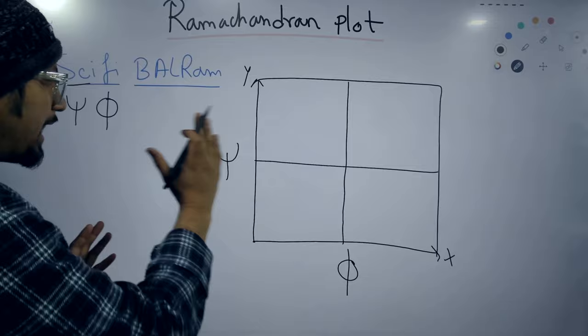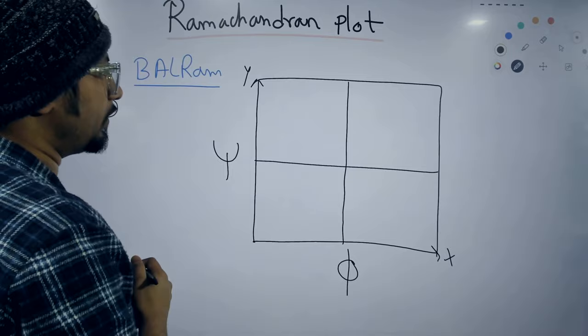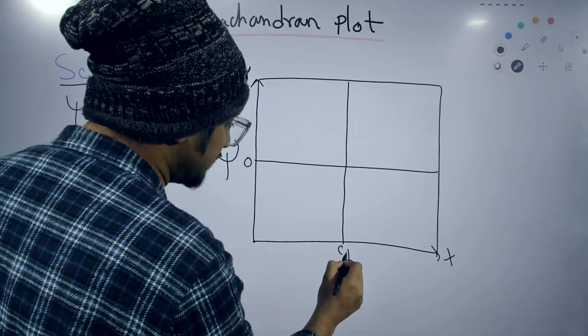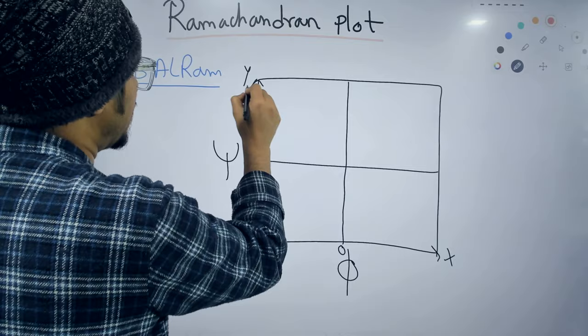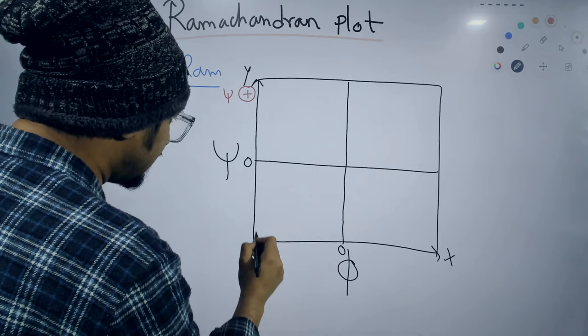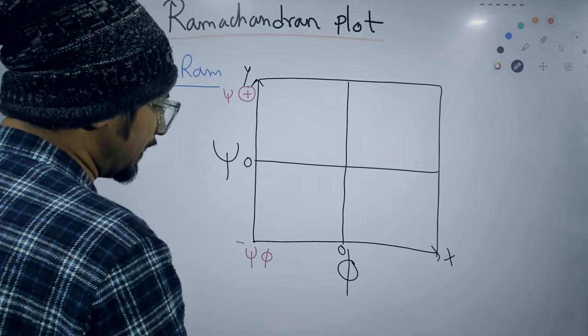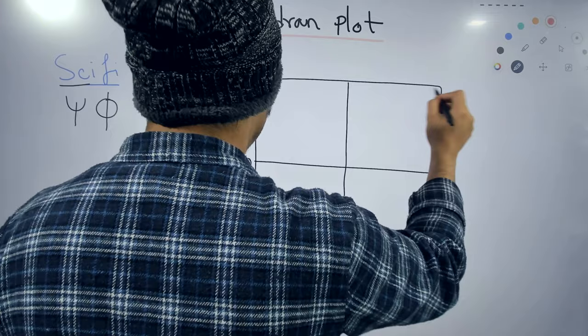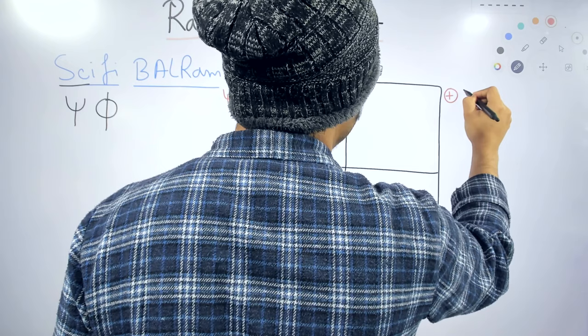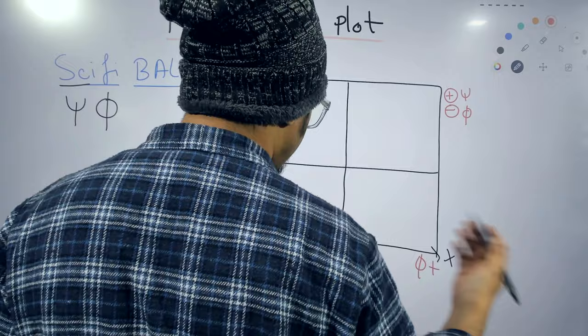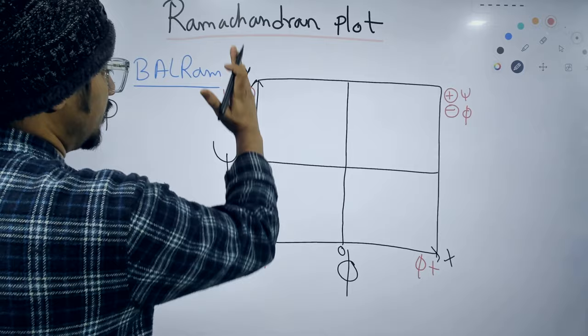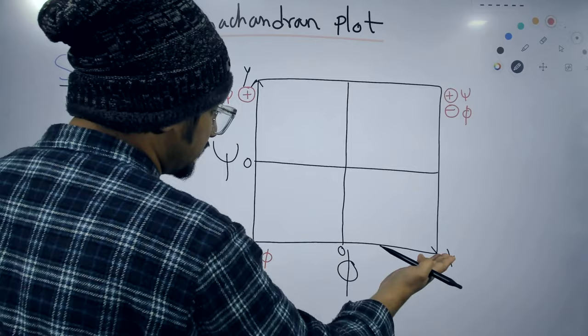Now we put the rest of the values. The center is 0 for both axes. Going upward, psi is positive; going downward, psi is negative. Going left, phi is negative; going right, phi is positive. So in the upper-left quadrant we have psi-plus, phi-minus. In the lower-left, psi-minus, phi-minus. In the upper-right, psi-plus, phi-plus. And in the lower-right, psi-minus, phi-plus.